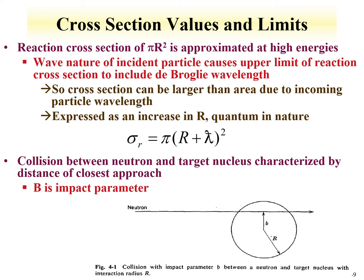Cross-section values in the chart of the nuclides range from well under a barn to many thousands of barns. The π R² geometric cross-section, approximately equal to one barn, applies at high energy. However, the wave nature of particles means the effective cross-section can include the de Broglie wavelength, extending to π(R + λ)². This means cross-sections can be larger due to the incoming particle's wavelength, and cross-section values change as a function of particle energy, while the target itself does not drive this variation.